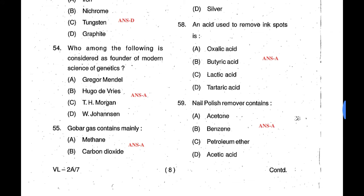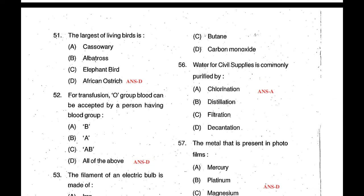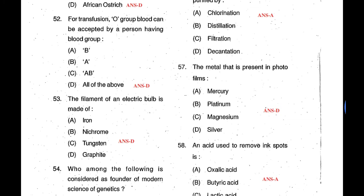Question 55: Gobar gas contains mainly methane — answer is A. Methane is a combustion gas. Question 56: Water for civil supply is commonly purified by chlorination. To purify water we add chlorine — that is called chlorination, answer is A. Question 57: The metal present in photo films is silver — answer is D. Question 58: The acid used to remove ink spots is oxalic acid — answer is A.